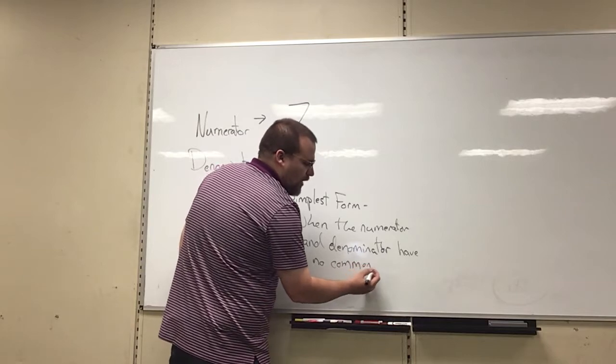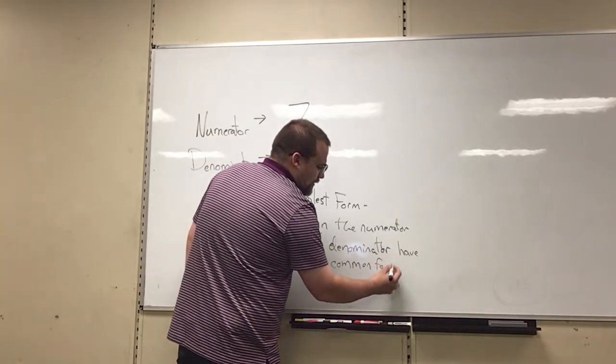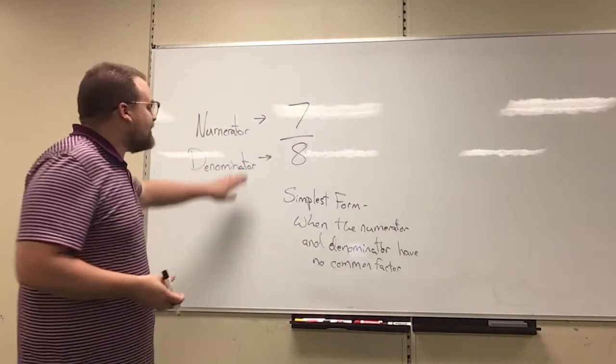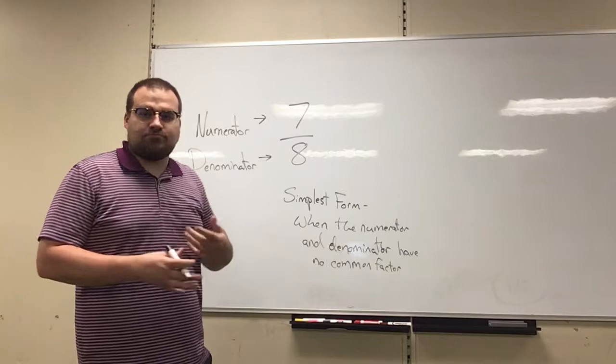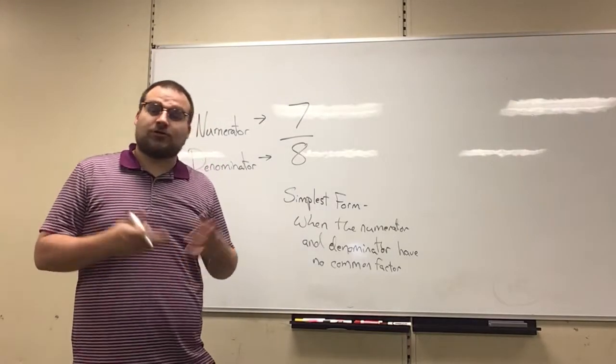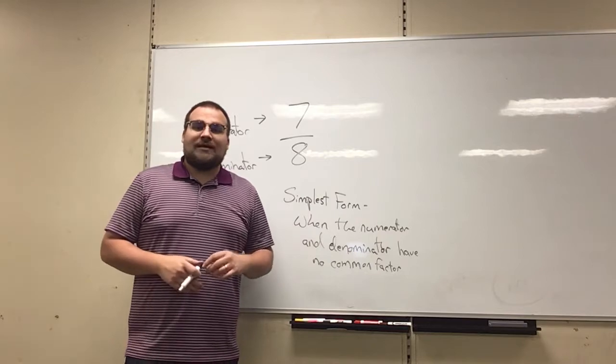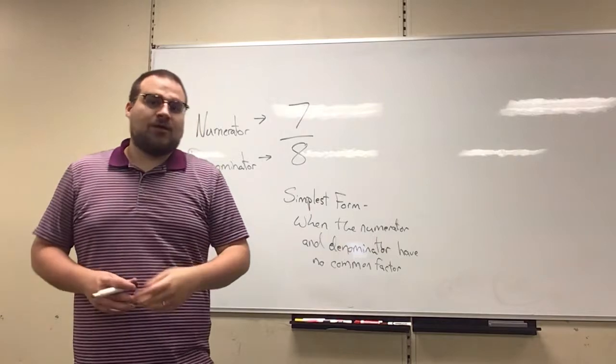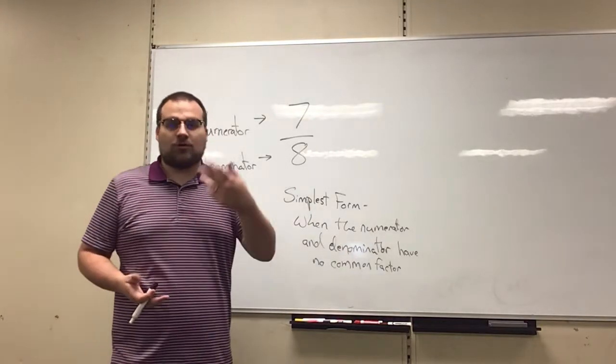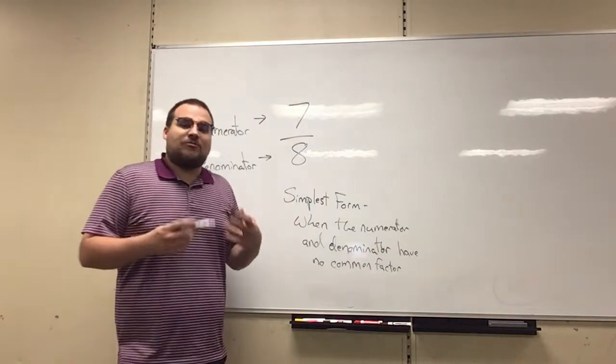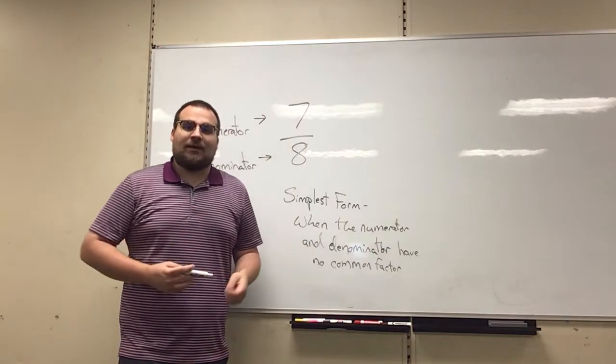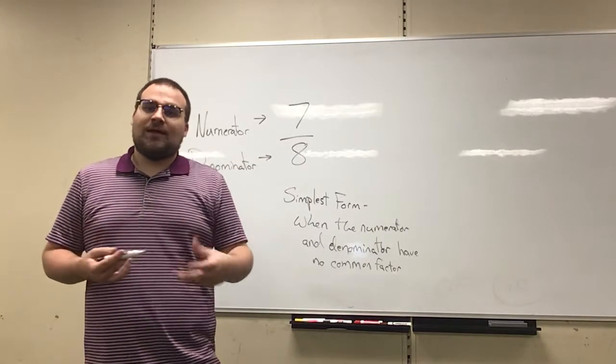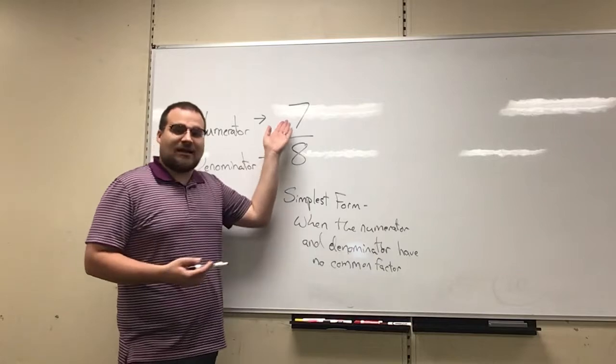You may be thinking, what's a common factor? A factor is a number that something is divisible by. For example, 8 is divisible by 2, and divisible by 4, and also divisible by 8 itself. Now, if the numerator also had one of those factors in common, meaning if the numerator was also divisible by 4, or 2, or 8, then they would have common factors and we would actually want to go ahead and simplify, or put it in simplest form.